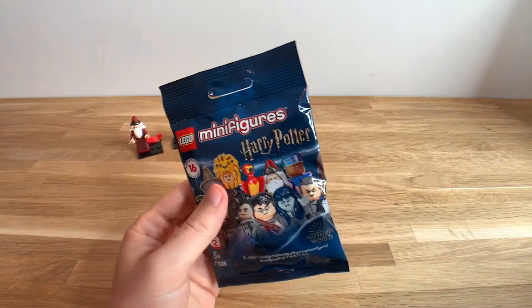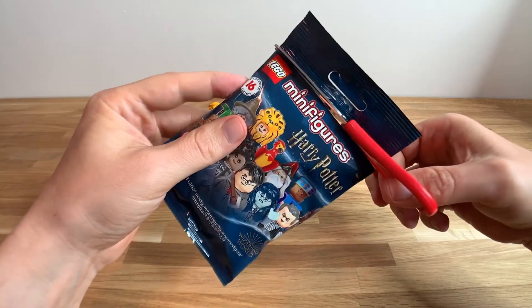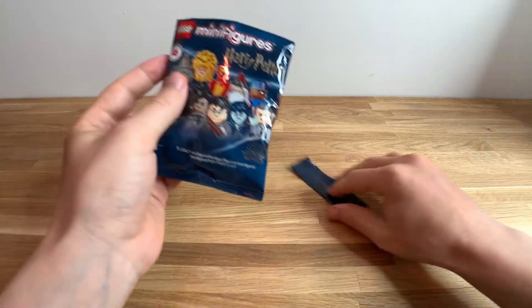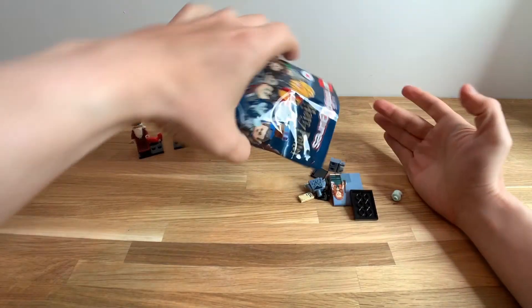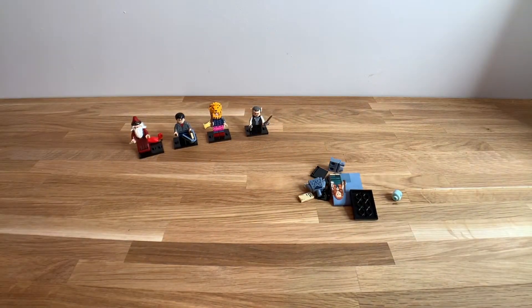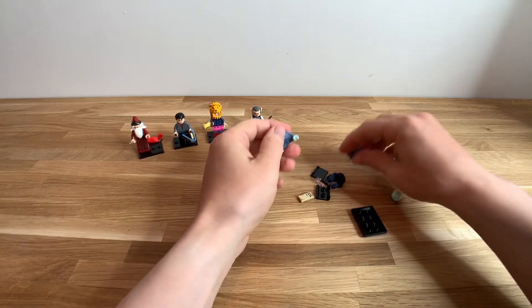And now the fifth and final bag. Lots of blue. This must be the Moaning Myrtle minifigure.